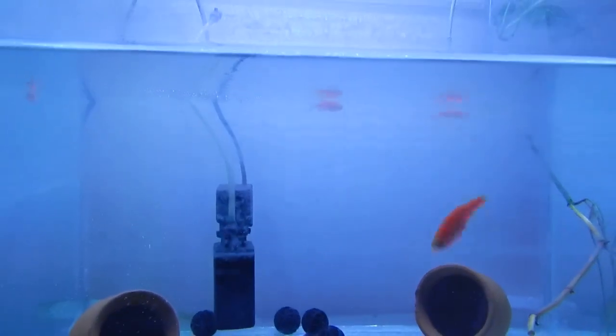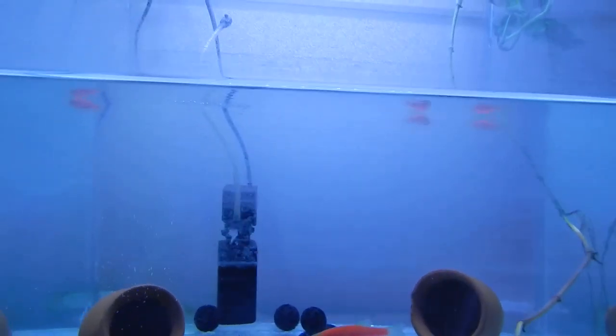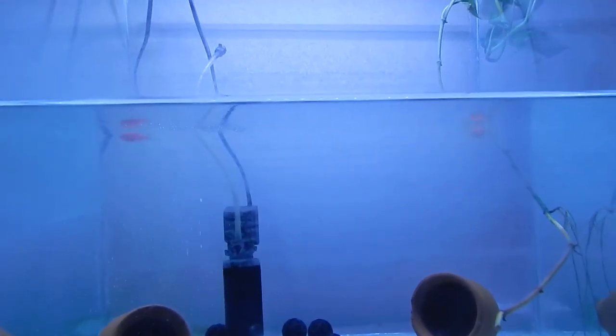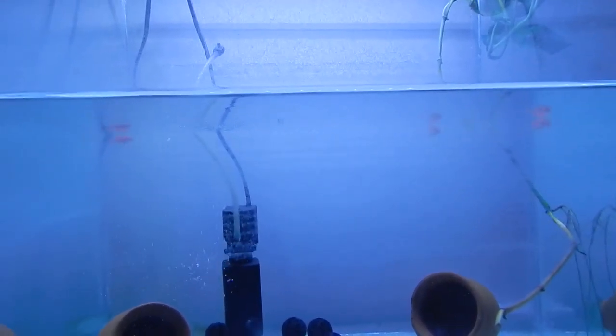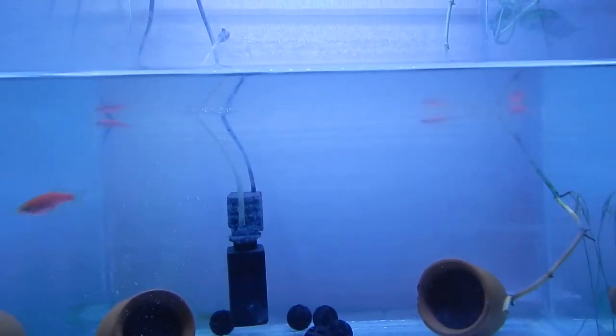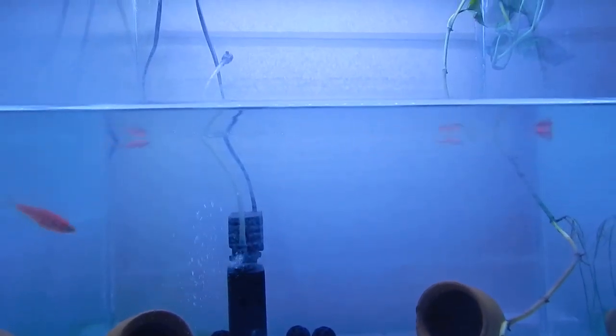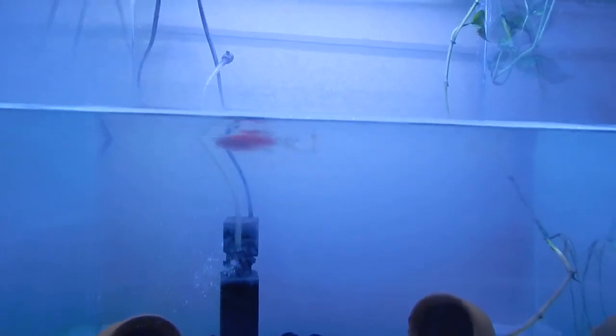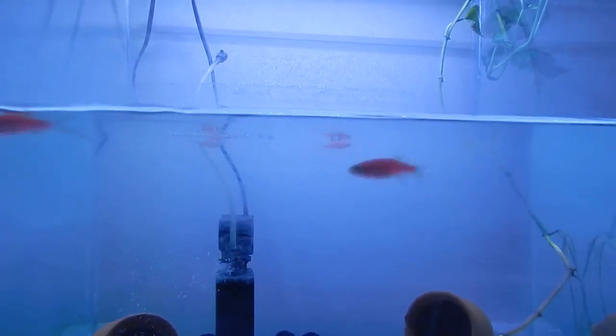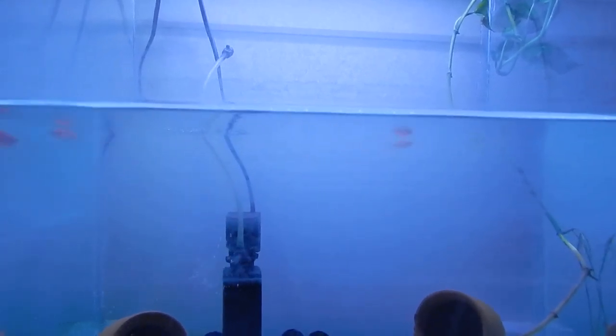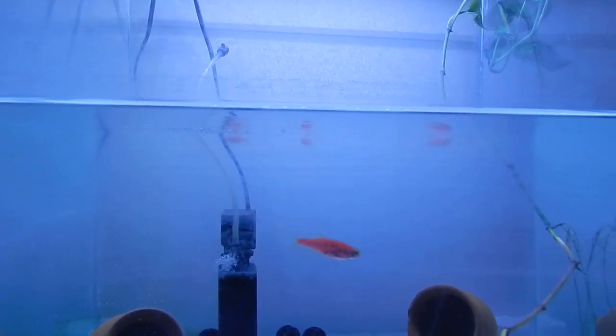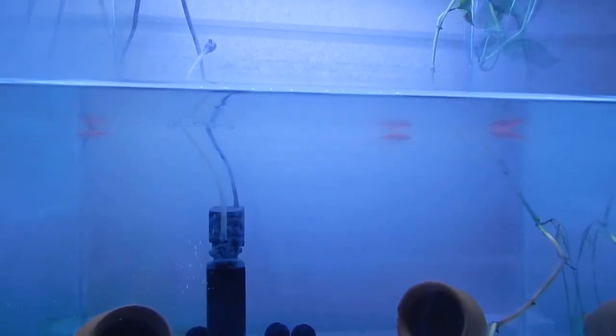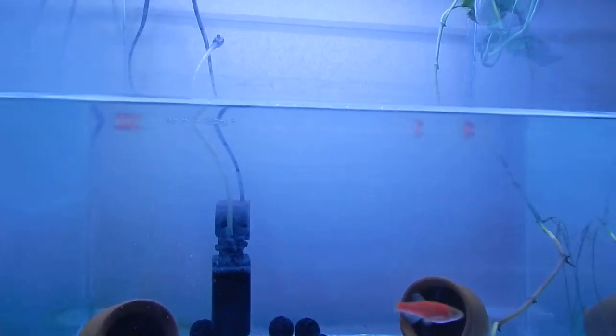Or you can use some chemicals that will decrease the pH of your water, basically increasing the acidity. That will not remove the minerals from your tank but it will keep the minerals dissolved inside the water so they can't deposit on the surface of your tank.